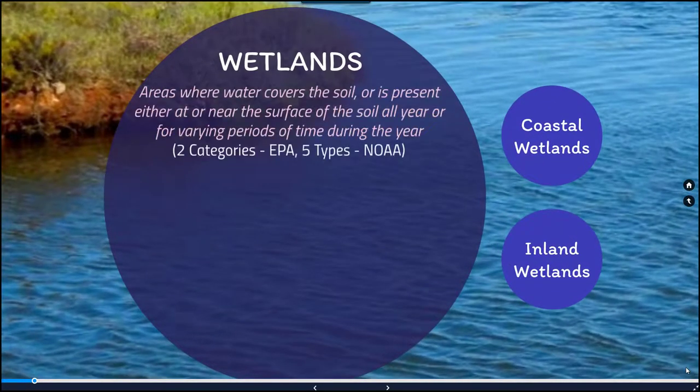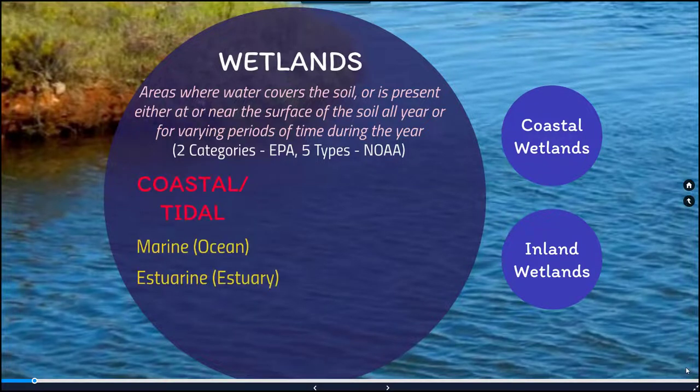Wetlands can be defined as areas where water covers the soil or is present either at or near the surface of the soil all year, or for varying times of that year. There are two different categories as described by the EPA and five different types or categories of wetland described by NOAA.